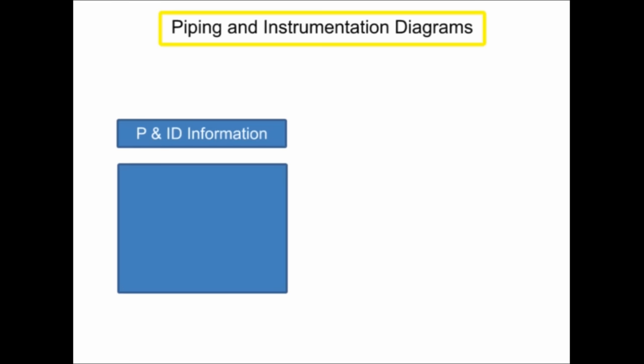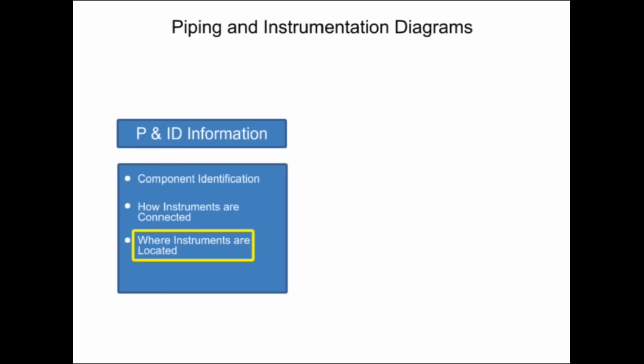Piping and instrumentation diagrams provide information that includes component identification, how instruments are connected, where instruments are located, and their function within a process.